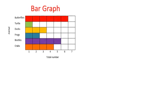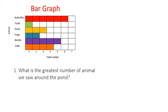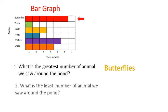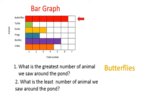Let's answer some questions by looking at the graph. What is the most number of animals we saw around the pond? Yes, it is butterflies. What is the least number of animals we saw around the pond?